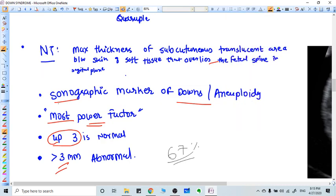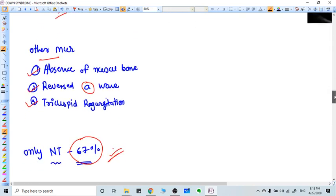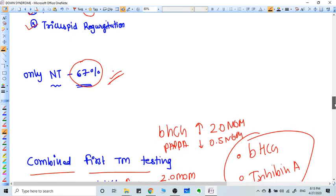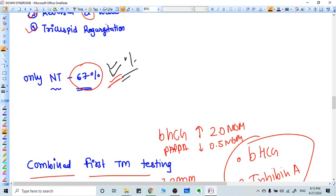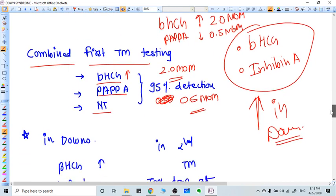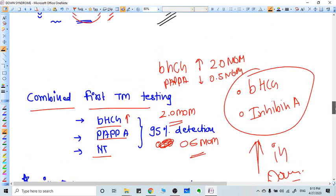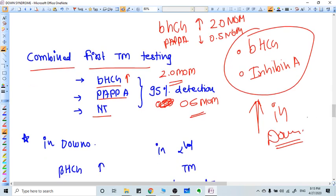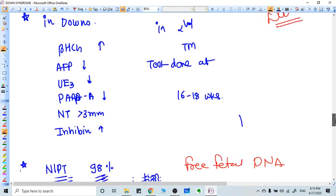Nuchal translucency is the most powerful factor. More than three millimeters is the abnormal criteria. Other markers we see on ultrasound: absence of nasal bone, reversal of the A wave in the portal vein, and tricuspid regurgitation. In 67 percent of cases when nuchal translucency is present, there can be Down syndrome. Combined testing is all three tests: beta hCG, PAPP-A, and NT - all these three tests make 95 percent detection rate.